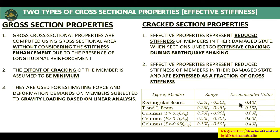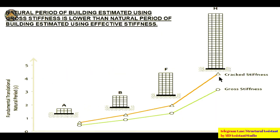Reduced cross-section properties must be considered carefully. Gross cross-section properties assume sections do not crack and are used for estimating force and deformation demands under gravity loading in linear analysis only. Cracked stiffness results in a larger natural period — because if stiffness decreases, the time period increases.